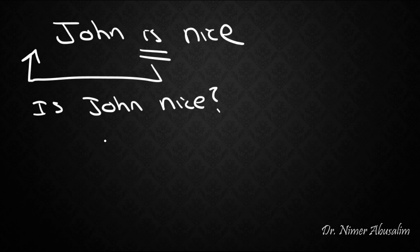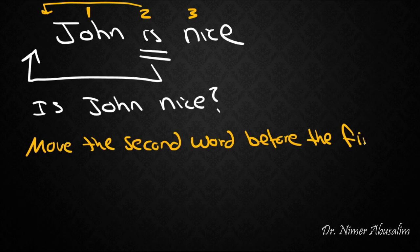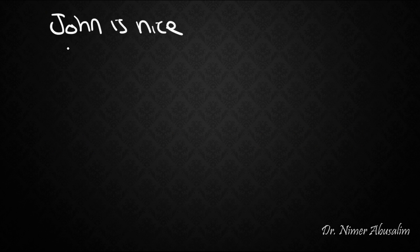What hypothesis can we come up with here? 'John' was the first word, 'is' the second, 'nice' the third. What we did was put the second word before the first. So our hypothesis could be: move the second word before the first. But now, what if instead of 'John is nice,' the sentence was 'the man is nice'?